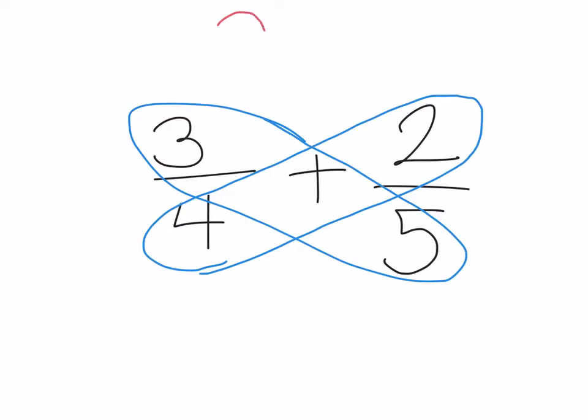Next, you would create the antennas for the butterfly. And inside the antennas, you would write the answer to the numbers that you are going to multiply. So 3 times 5 is 15, so you put that right there. And 4 times 2 is 8, so you put that right there.